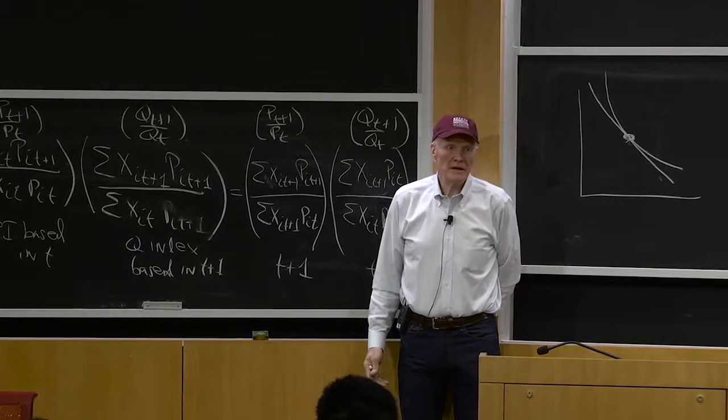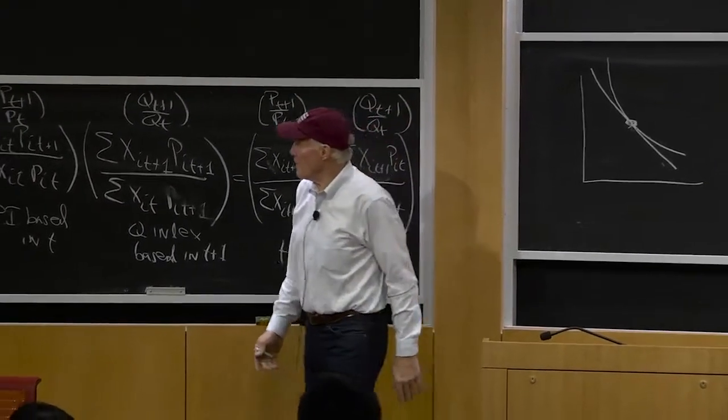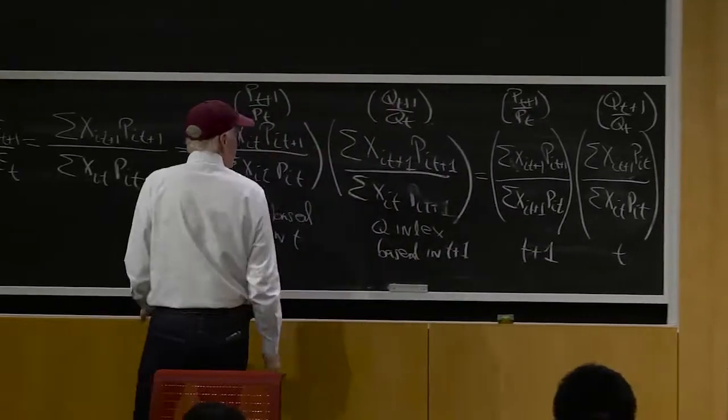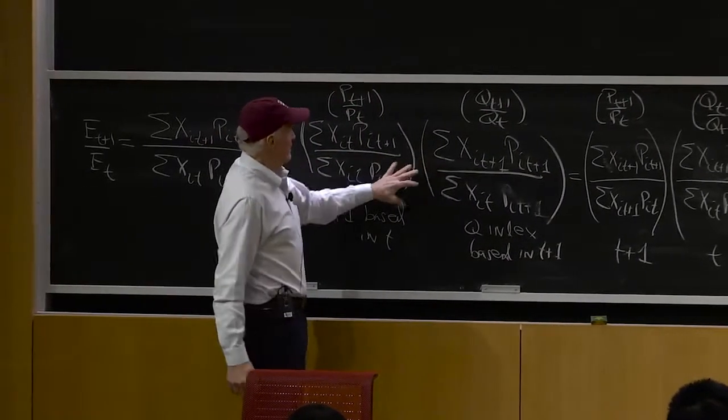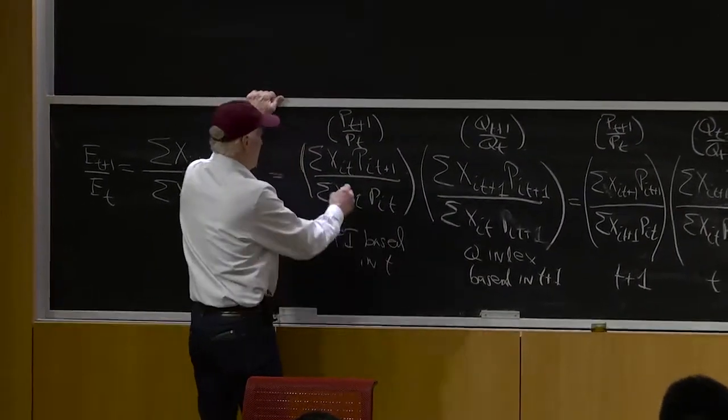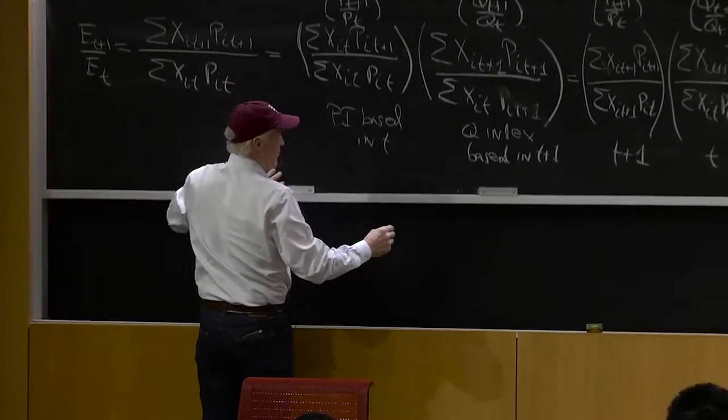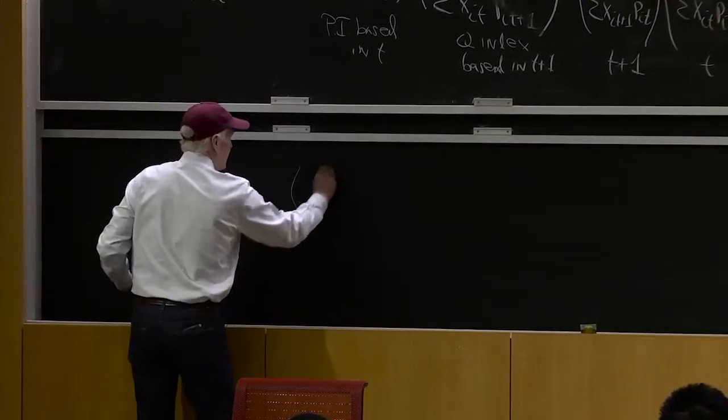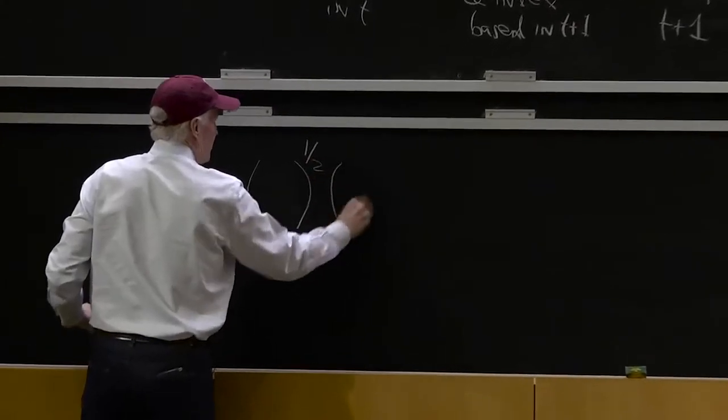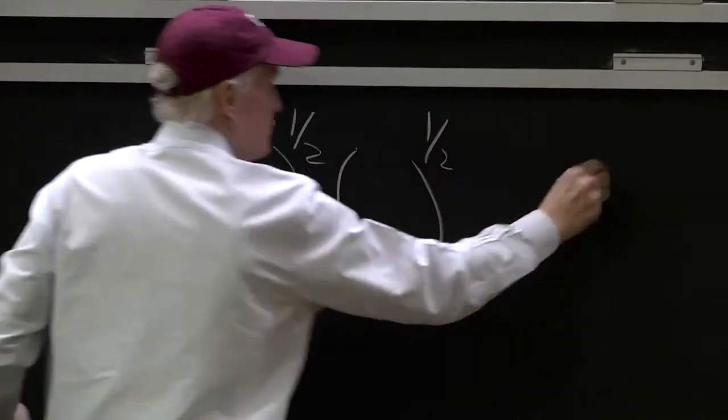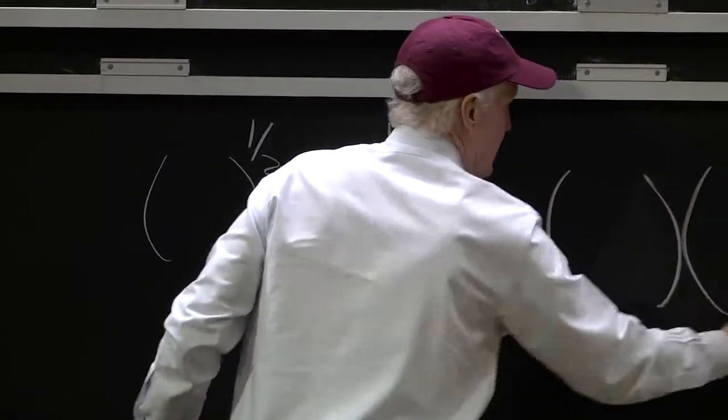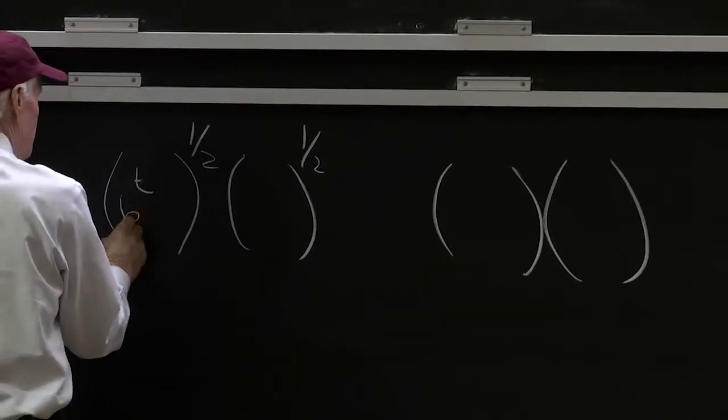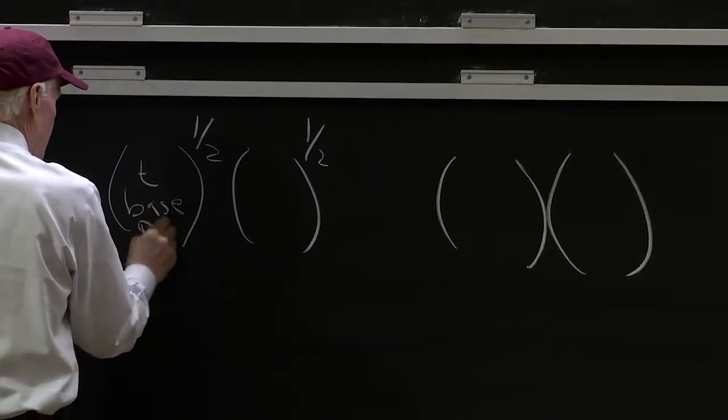Any questions? Now sometimes what people do is they actually combine these two together. They'll take one of these indices and raise it to the half, and then they'll do the same for the quantity indices. So this would be a t base price index, t plus 1 base price index.